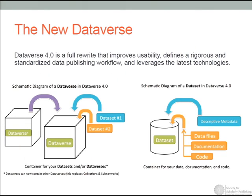A Dataverse repository contains multiple Dataverses. One Dataverse is basically a container of datasets, and a dataset is more than just a data file — it needs some context, it needs some metadata, some description about what the data is about, and also additional files. Sometimes a data file is not sufficient if you want reproducibility; you might have some code, some documentation, or anything else that accompanies the dataset to be able to understand and draw inference from that data.